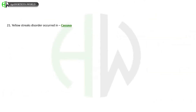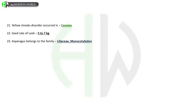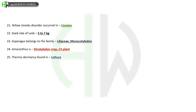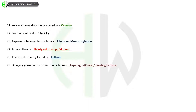Yellow streaks disorder occurs in cassava. Seed rate of leek is 5–7 kg. Asparagus belongs to the family Liliaceae, which is monocotyledon. Amaranthus is a dicotyledon crop and a C4 plant. Thermodormancy is found in lettuce. Crops where delayed germination occurs include asparagus, onion, parsley, and lettuce.